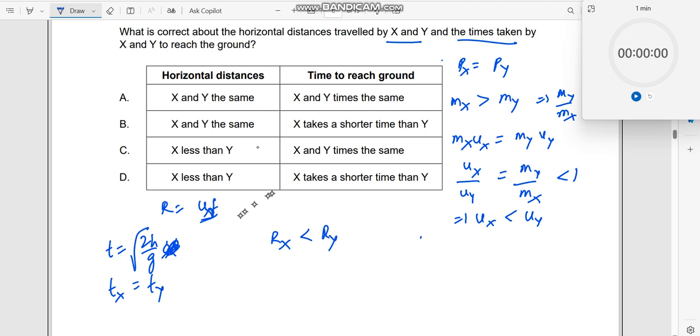Tx equal to Ty. Where is Tx equal to Ty? Let us look at this. X and Y times are same. This is correct. X and Y times are same. This is also correct. So, these two are gone, right.